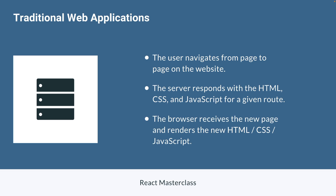With a traditional web application, the user navigates from page to page on our website. Every time they land on a specific page, route, or path, the browser makes a request to a server somewhere on the internet. The server figures out what route the user is on and responds with the HTML, CSS, and JavaScript for that given page. The browser then receives that HTML, CSS, and JavaScript and renders the page the user sees. From that point forward, the process repeats every time the user visits a new page.